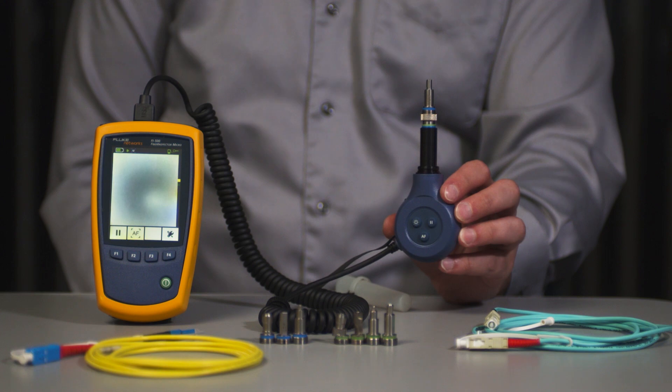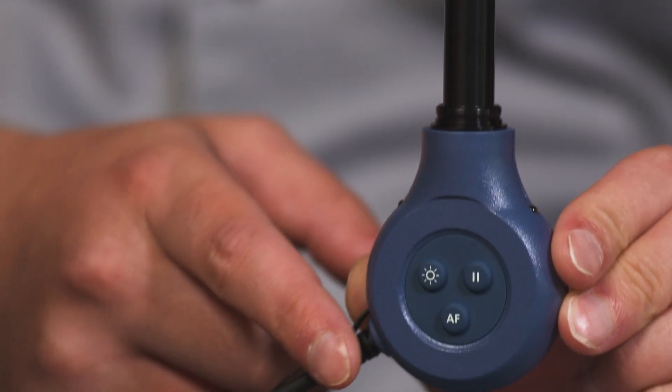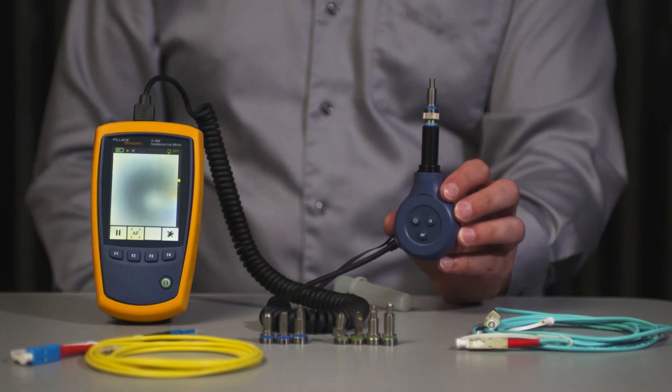The Fi500 is a breeze to use. The probe has key controls mounted on it for easy operation and is designed to fit into tight spaces.